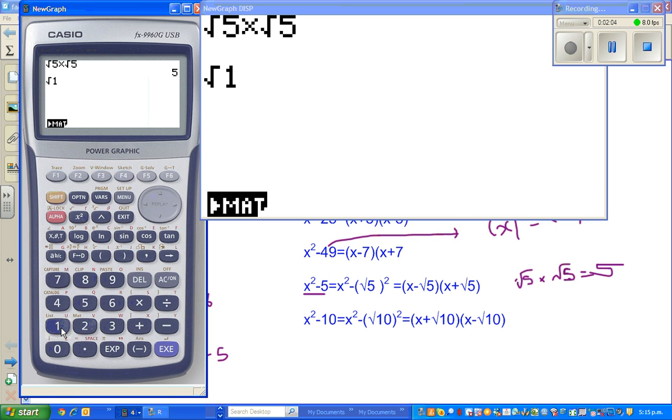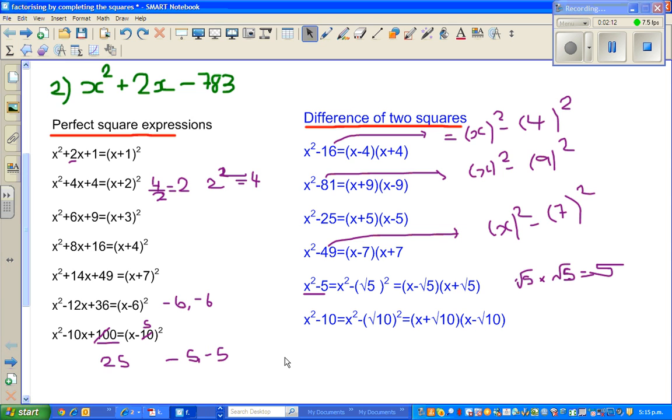Suppose square root of 101 times square root of 101 gives you 101. So one more example here: x²-10 is equal to x²-(√10)². And this becomes a difference of 2 squares. So we can say (x+√10)(x-√10). This can be helpful in some difficult examples.